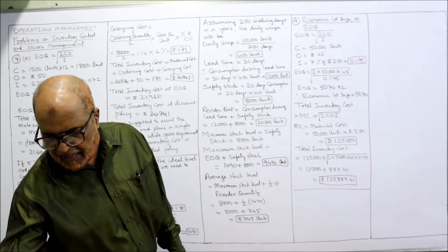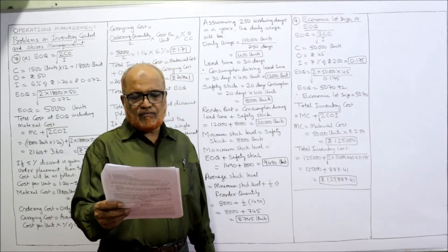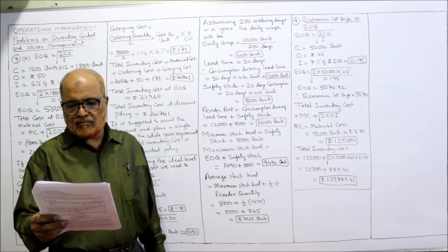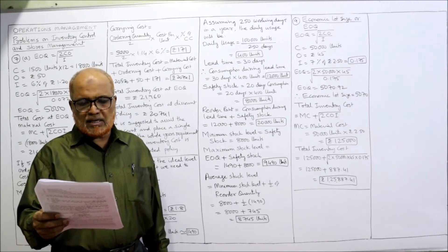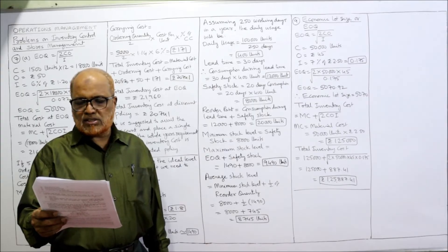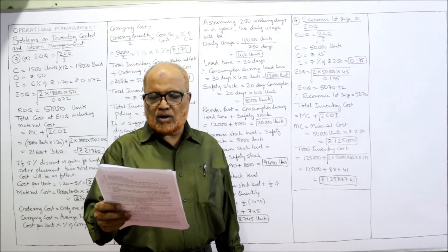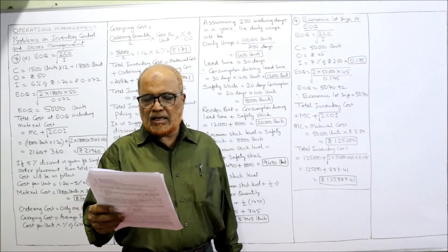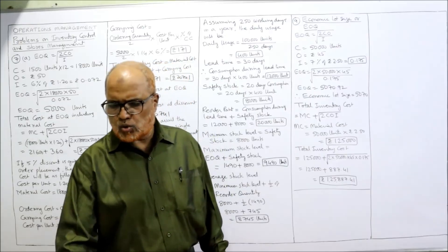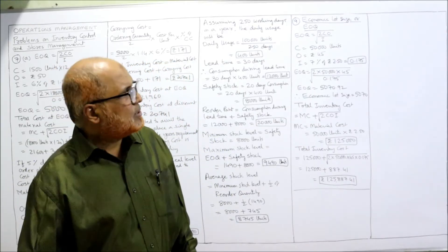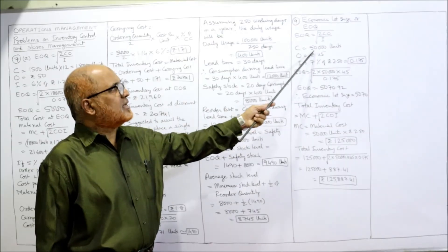Now problem number 9: a company uses annually 50,000 units of raw material costing 2.50 rupees per unit. Placing each order costs 45 rupees and the carrying cost is 7% per year of average inventory. Find the economic lot size and total inventory cost. The EOQ formula is square root of 2CO by I.